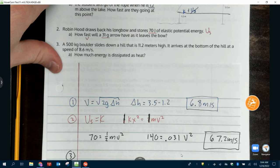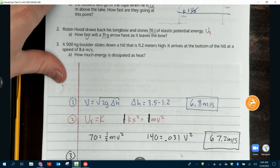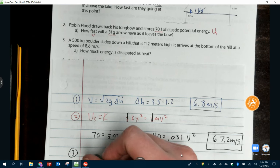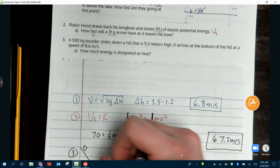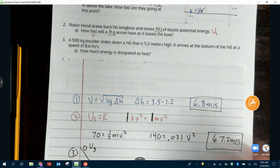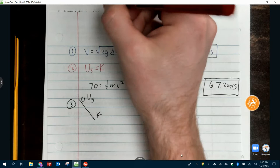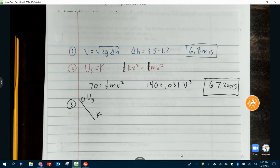Number three, we've got a 500 kilogram boulder slides down a hill that is 11.2 meters high. It arrives at the bottom of the hill at a speed of 8.6 meters per second. How much energy is dissipated as heat? So what type of energy does it start with? Potential. What are you finished with? Kinetic. Anytime we have how much energy is dissipated, what does that tell you we're going to do with our energies? We're going to subtract. We're able to solve for both of them. We're going to subtract. That difference is the energy that we lost.